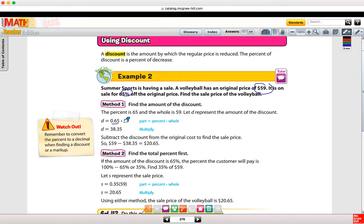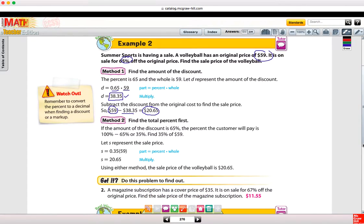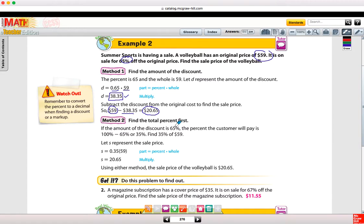Multiply that by $59. The discount is $38.35. Don't stop there. That's what a lot of students forget to do, is that they forget to take the price of the volleyball, take away the discount. $20.65 is actually the price, the sale price.